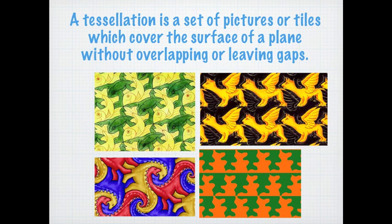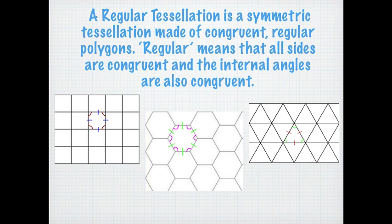A tessellation is a set of pictures or tiles which cover the surface of a plane without overlapping or leaving gaps. Regular tessellation is a symmetric tessellation made of congruent regular polygons. Regular means that all sides and internal angles are congruent.